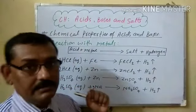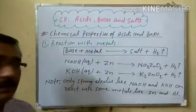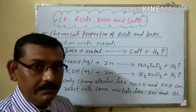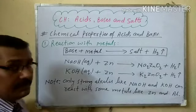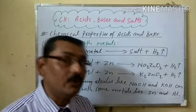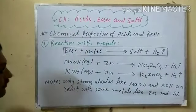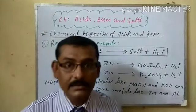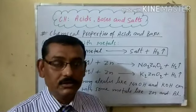Now, bases also react with metals and liberate salt plus hydrogen gas. But note carefully: not every base can react with metals. Only some strong alkalis like sodium hydroxide and potassium hydroxide — these are very strong, water-soluble bases — can react with metals to form salt and hydrogen.